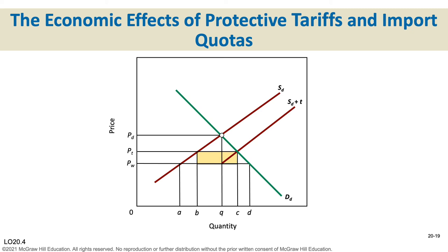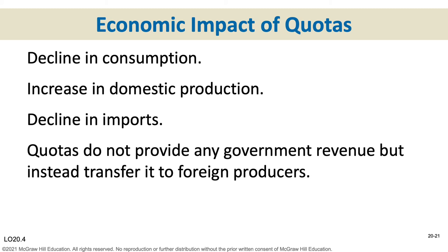The effects of tariffs: there's a decline in consumption because consumers pay a higher price — instead of just the world price, they pay the world price plus the tariff, so they buy less. There's also a decline in imports. All tariffs raise revenue for the federal government, but there are indirect effects too, such as the impact on the foreign producer's economy when their exports are reduced. Quotas, as an absolute limit, also cause a decline in consumption — once the quota is reached, no more can be imported. The purpose of a quota is to increase domestic production, but unlike tariffs, quotas generate no revenue.